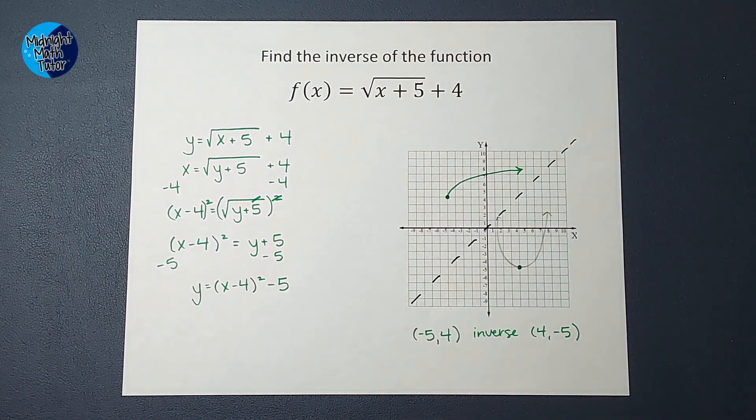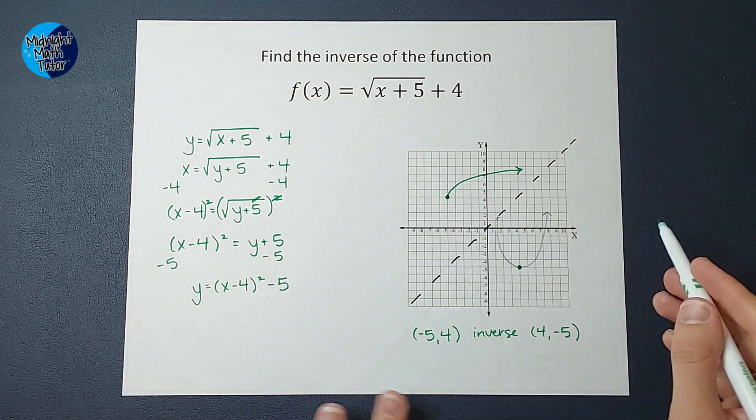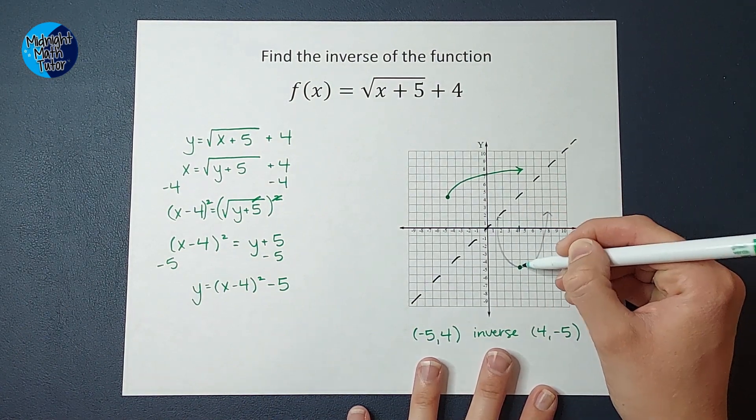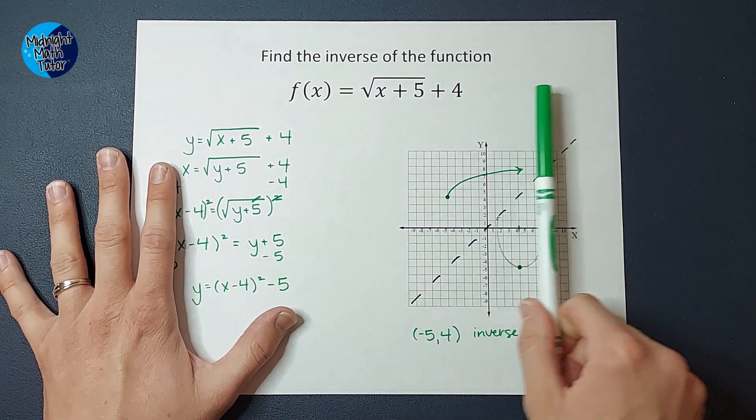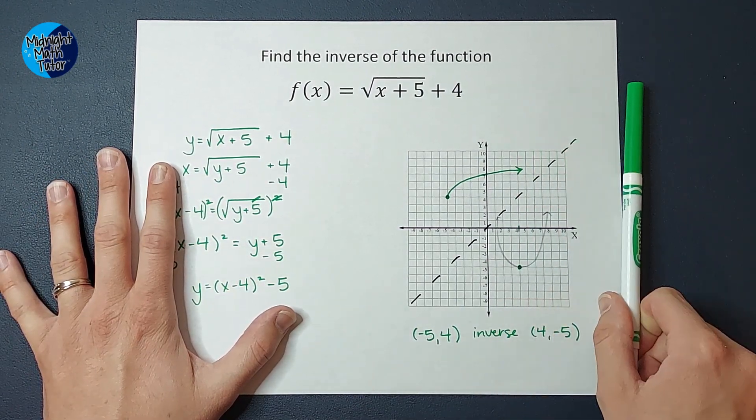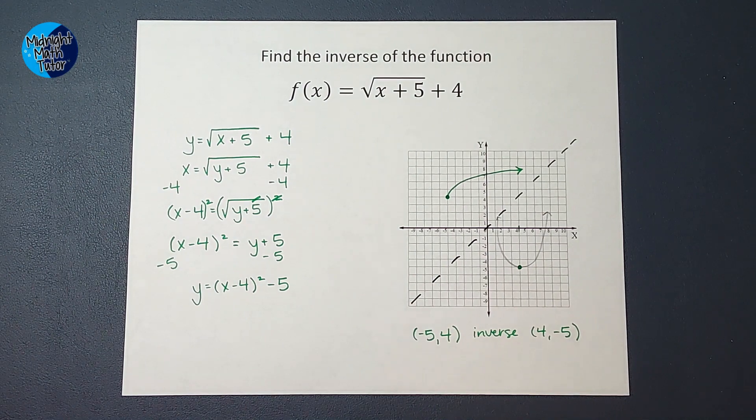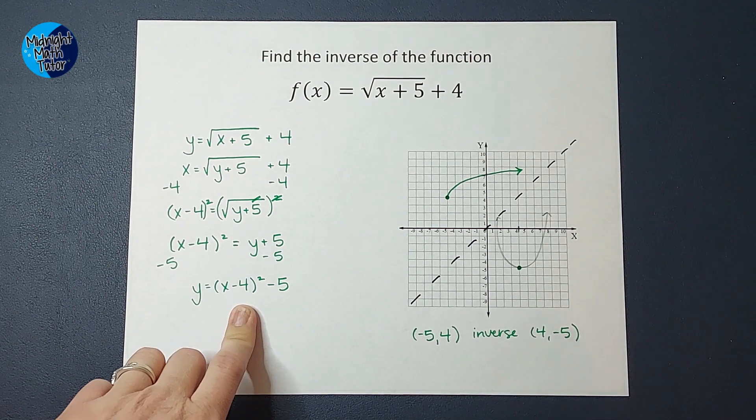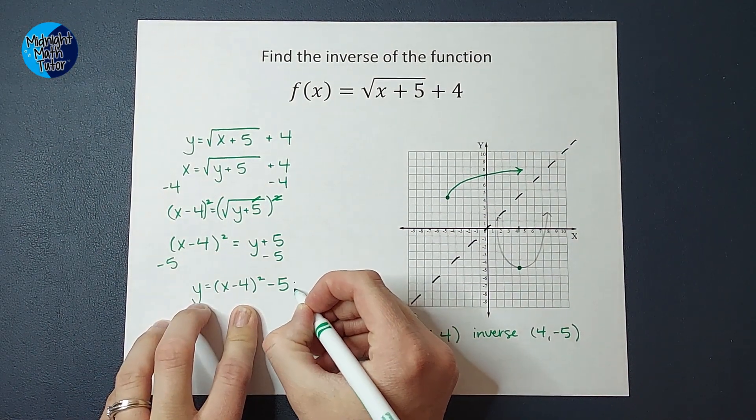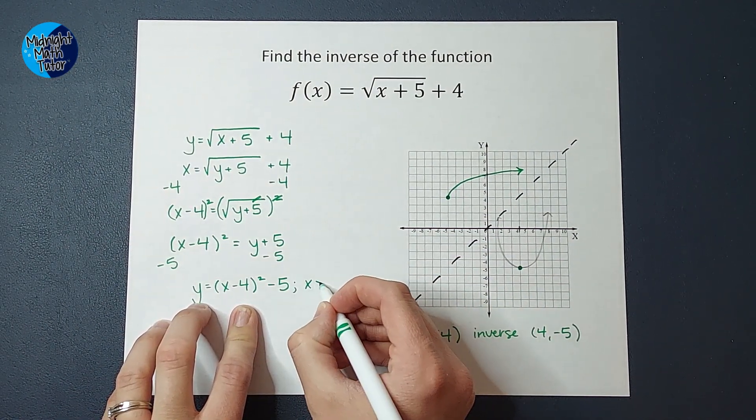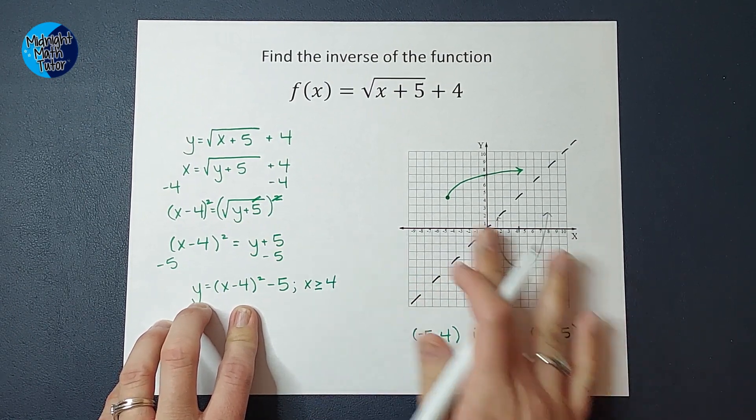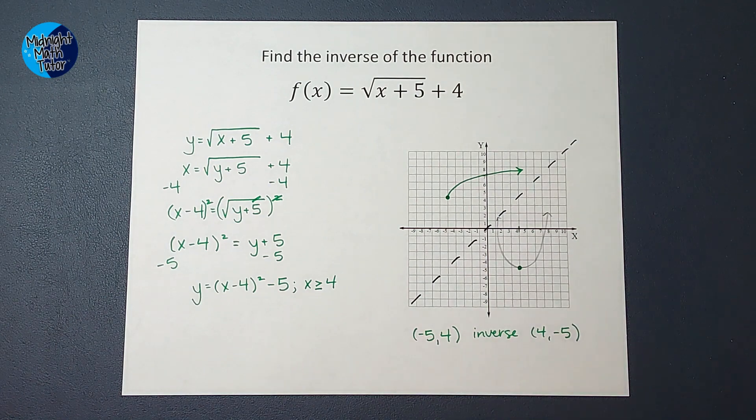So basically, if I look at my x-axis, right, my dot is at 4, negative 5. So I only want the x values equal to 4 or greater, right? I don't want these other guys. So my inverse is not going to just be this. It's going to be this, where x is greater than or equal to 4. I don't want those other guys, right? Those aren't an inverse of this function.